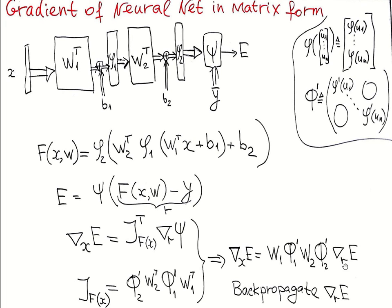So here it should be gradient of psi. But actually our E is psi. So it's the same notation. Gradient of E with respect to residual R is the same as gradient of psi. So we have this nice formula.